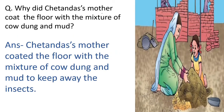Why did Chetan Das's mother coat the floor with the mixture of cow dung and mud? You can see in the picture that Chetan Das's sister Gudiya and his mother were mixing mud and cow dung. Chetan Das's mother coated the floor with the mixture of cow dung and mud to keep away insects.